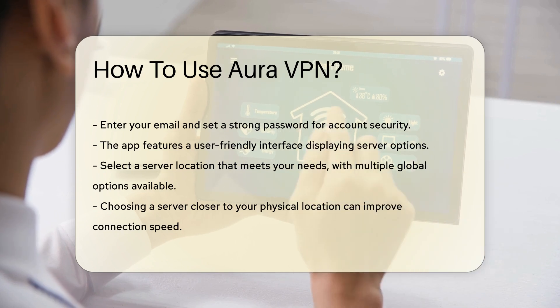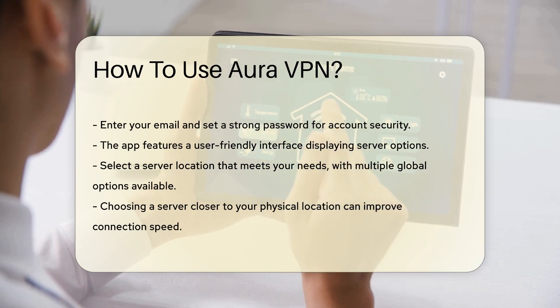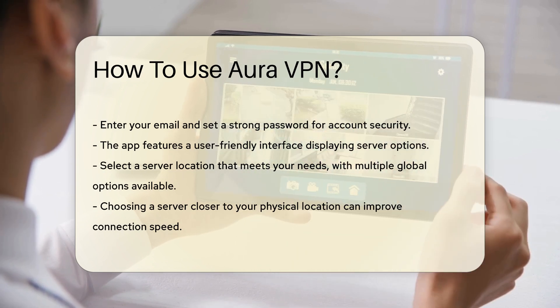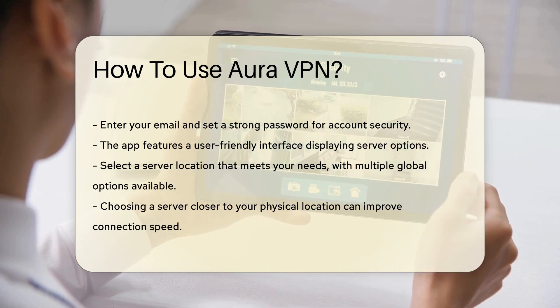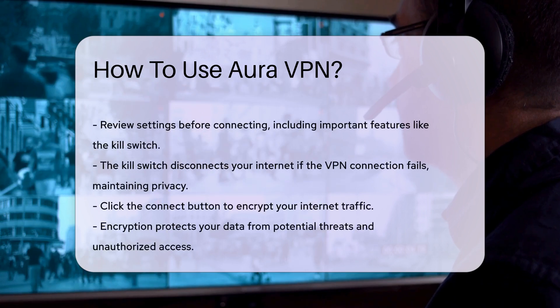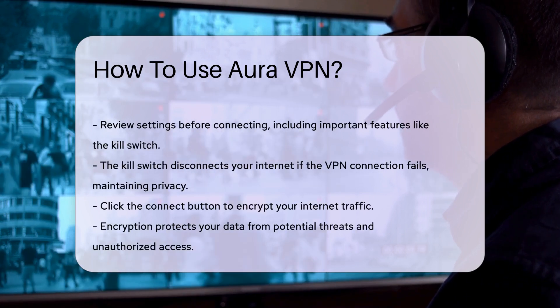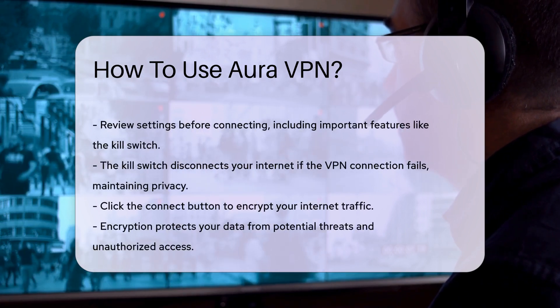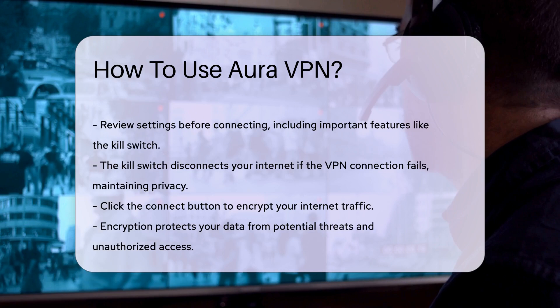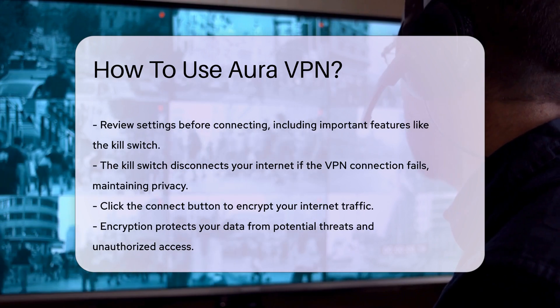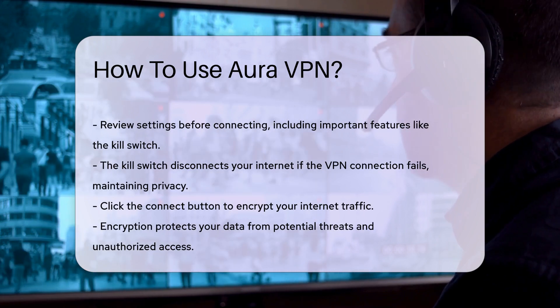Before connecting, review the settings. Aura VPN offers features such as a kill switch, which disconnects your internet if the VPN fails. This feature is important for maintaining privacy.